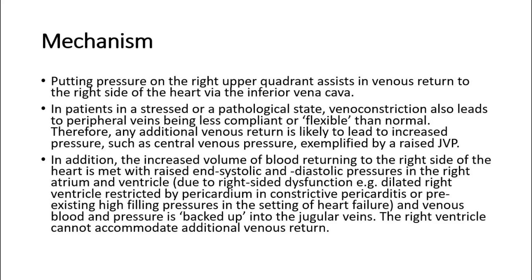In addition, the increased volume of blood returning to the right side of the heart is met with raised end-systolic and diastolic pressures in the right atrium and ventricle, due to right-sided dysfunction — such as a dilated right ventricle restricted by the pericardium in constrictive pericarditis, or pre-existing high filling pressures in the setting of heart failure — and venous blood and pressure is backed up into the jugular veins. The right ventricle cannot accommodate the additional venous return.